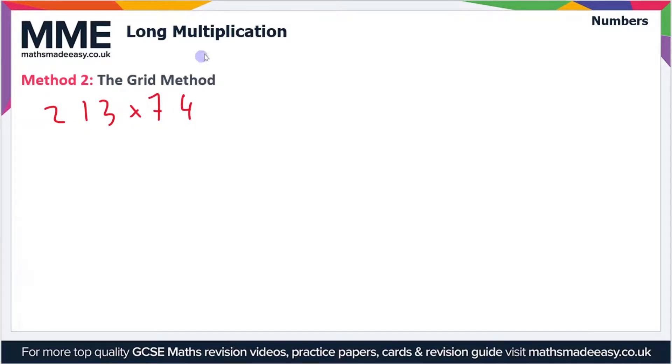When we do the grid method, we have to split each of these two values into its constituent parts. We'll write the larger number on the top first. So 213 will split up into 200, 10, and 3—so 200 plus 10 plus 3. I've split it into the hundreds, the tens, and the single units or ones.